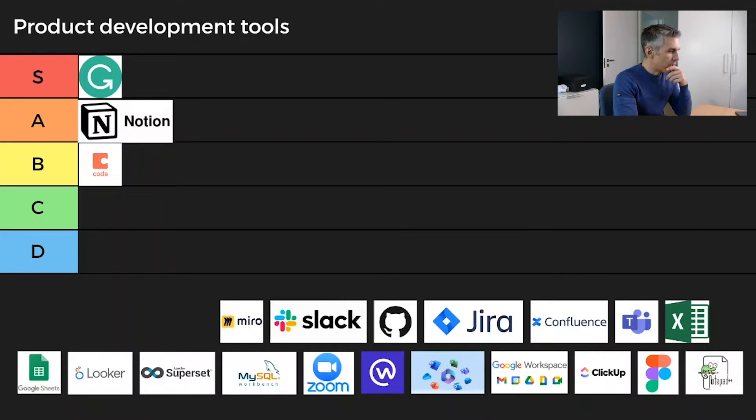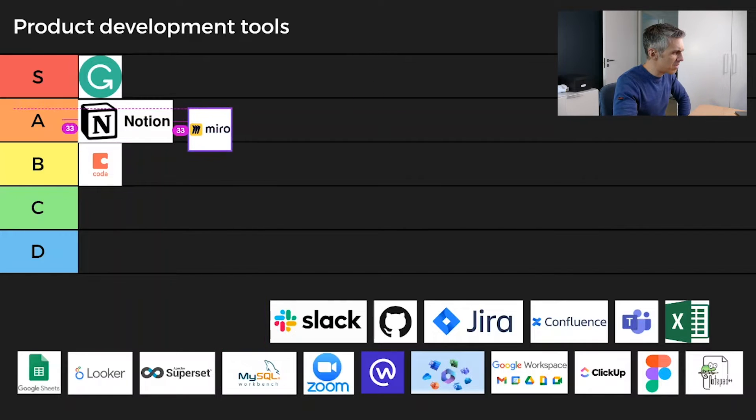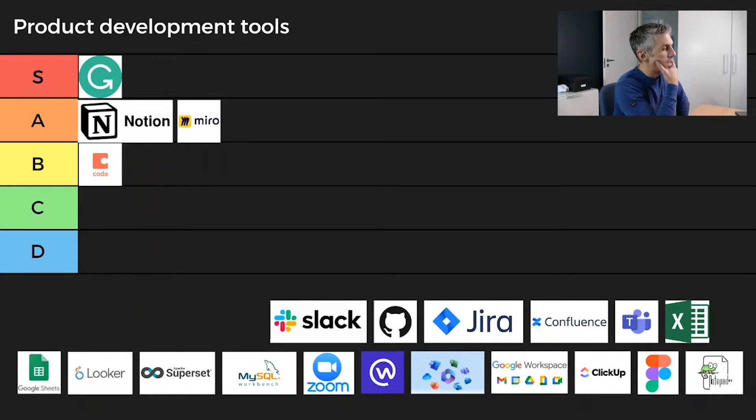The next one is Miro — I think Miro is a great tool that kind of took the world by storm. Suddenly everybody had to use Miro because we were all working from home; it was the perfect place to collaborate and brainstorm. I've also been using it sometimes to do mockups, sketching ideas, workflows, and even potential UI — it's not the best tool for that, but it's so simple and easy to use that it does the work for me. I'd say this is an A.